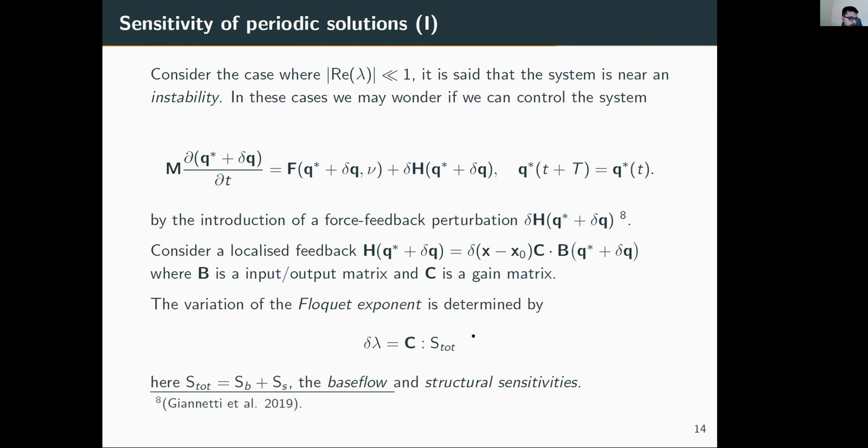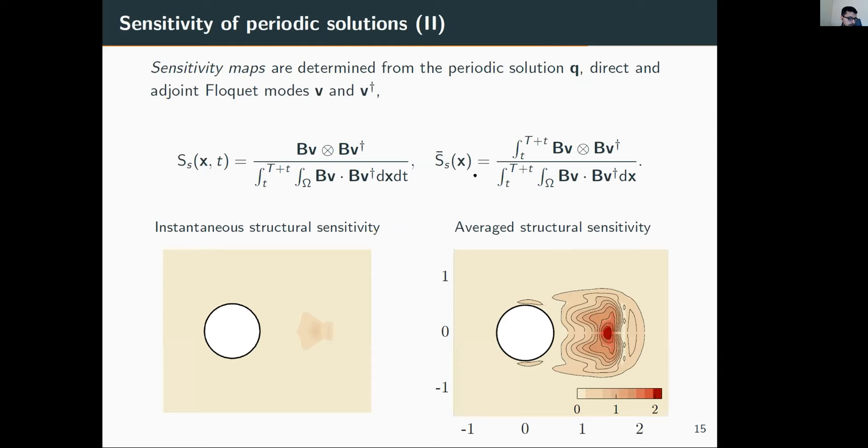This includes sensitivity to base flow variations, sensitivity to variations in the periodic orbit itself, and sensitivity to modal structure variations. Unfortunately, I don't have time to discuss how to compute them in detail, but once we've computed the periodic orbit and the direct and adjoint Floquet vectors—note this last one is denoted with a dagger—we may think of adjoint Floquet vectors as solutions of the complex conjugate eigenvalue problem where the Jacobian is transposed and conjugated.